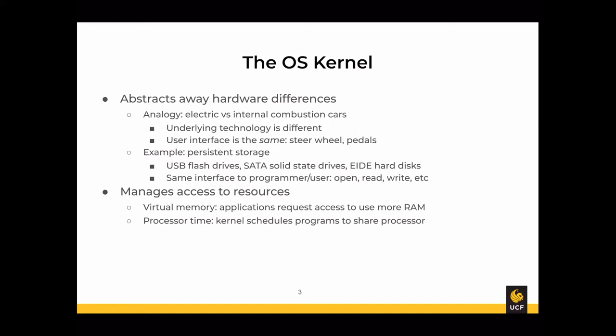The kernel also manages access to the processor. Most laptops or desktops have a single processor, maybe with multiple cores — maybe four. But you can still run dozens or hundreds of concurrent programs. With a windowing or interactive interface, the computer gives you the illusion that programs are running simultaneously. With a single processor, they're not literally running at the same time. The kernel schedules programs to share processor access, switching between them so quickly — in a fraction of a second — that it creates the illusion of parallel execution.